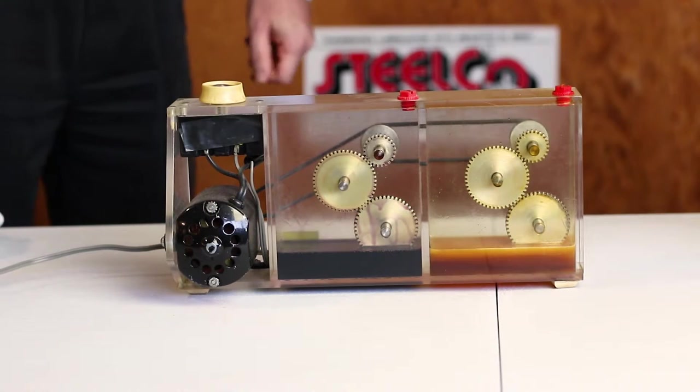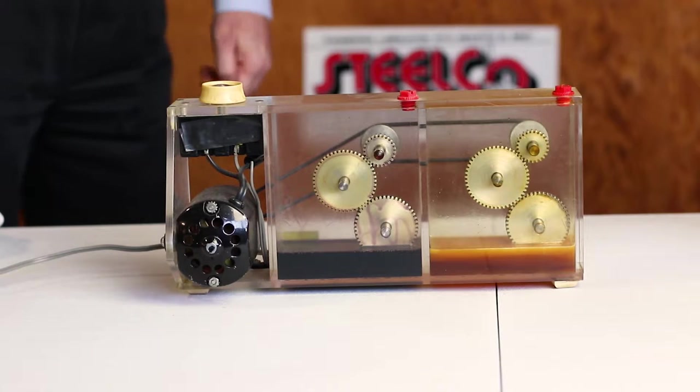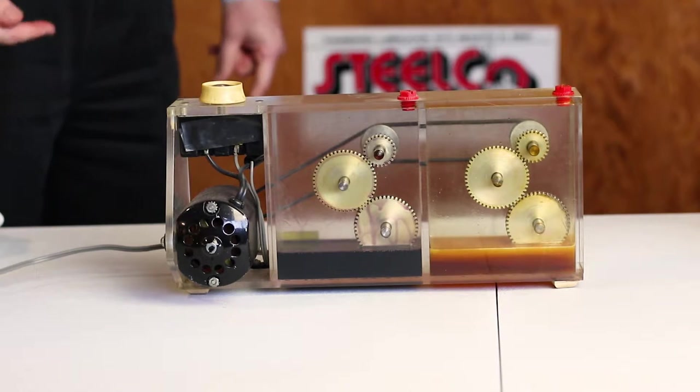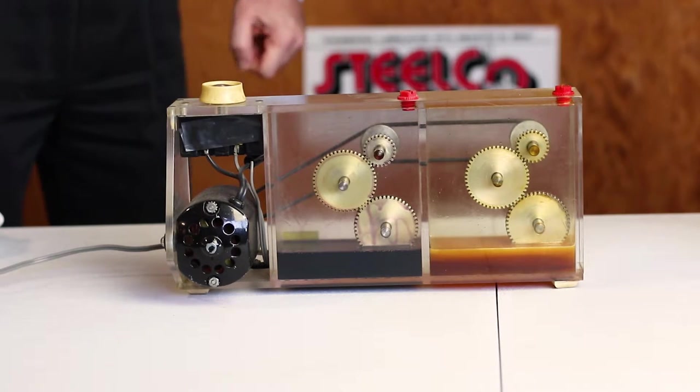There are a few ways that gearboxes leak. One is overfilled where they fill it past the seals and then it will leak out and seek its own level.